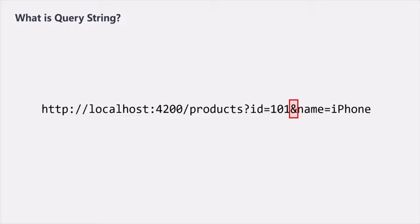Using this Query String, we are passing some extra data to the server — specifically the ID and name and their values. Keep in mind that Query Strings should only be specified for GET requests, not for POST or other types of requests. If you want to send data to the server in a POST request, that data should be passed in the request body and not as a Query Parameter.